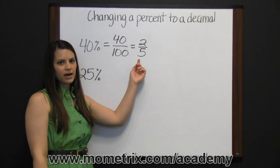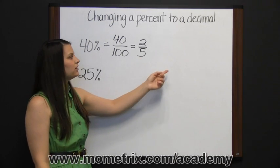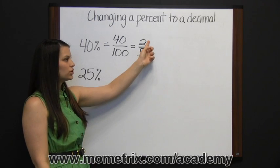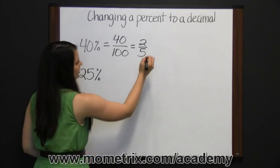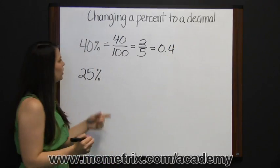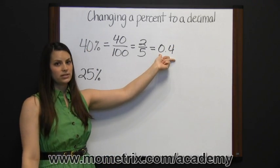Then when our fraction is simplified, we can convert our fraction to a decimal by dividing the numerator by the denominator. Two divided by five is four-tenths. So forty percent as a decimal is four-tenths.